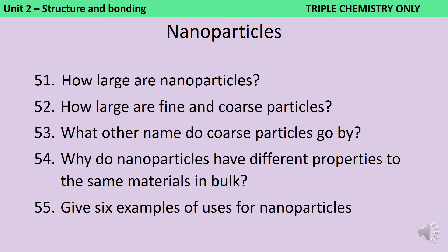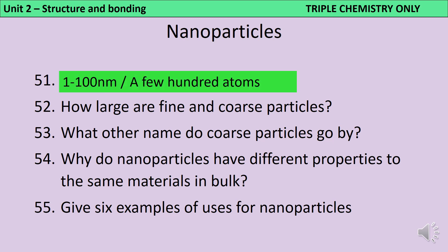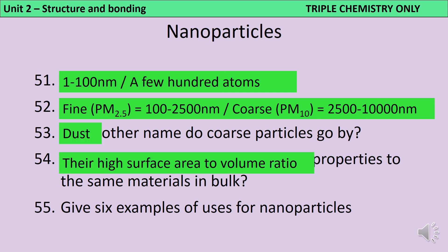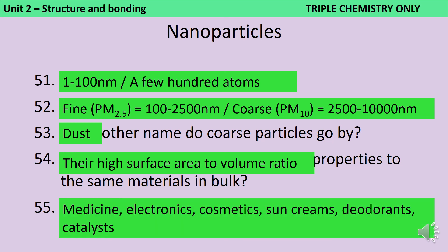Nanoparticles are between 1 and 100 nanometres across and can contain up to a few hundred atoms, although some such as Buckminsterfullerene contain even fewer. Fine and coarse particles are two other classes of particles slightly bigger than nanoparticles. Fine particles, also known as particulate matter 2.5, are up to 2.5 micrometres across — in other words between 100 and 2500 nanometres. Coarse particles, also known as particulate matter 10, can be up to 10 micrometres across — between 2500 and 10,000 nanometres — and are also known as dust. Nanoparticles have different properties due to their high surface area to volume ratio, and they can be used for medicines, electronics, cosmetics, sun creams, deodorants, and catalysts.